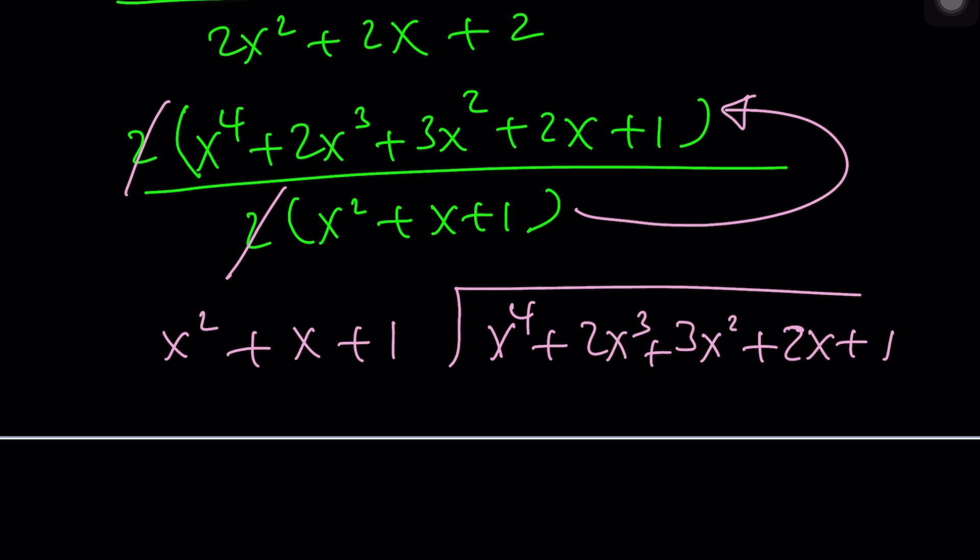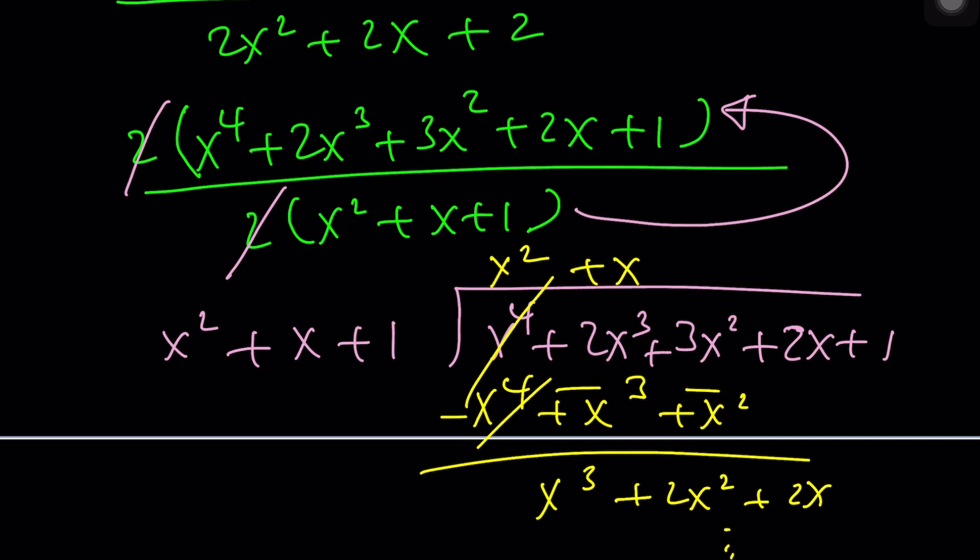But you know, I know that some countries do it differently, like Turkey. x squared goes into x to the 4th x squared times, and then you distribute x to the 4th plus x cubed plus x squared, and then you negate and subtract. You get x cubed plus 2x squared, and then you bring down the 2x, and so on and so forth. You get the idea? This should give you something nice. It's not too long, it's not too bad. Or should I show you what it looks like? Almost done, so we might as well just do it.